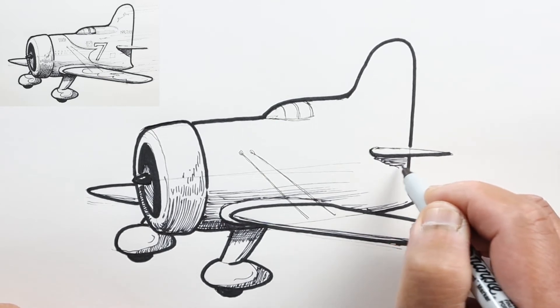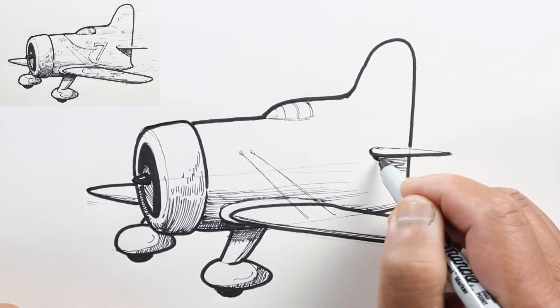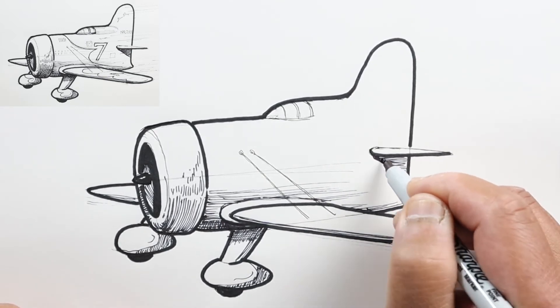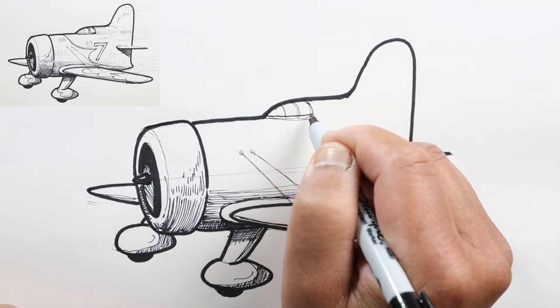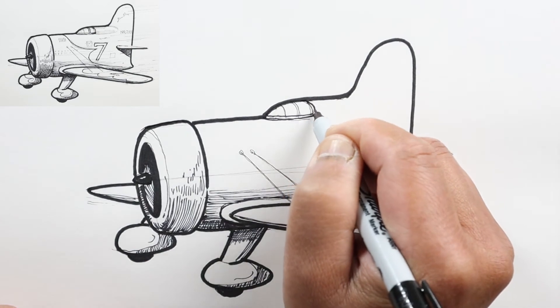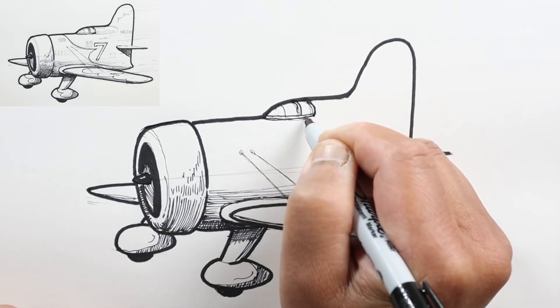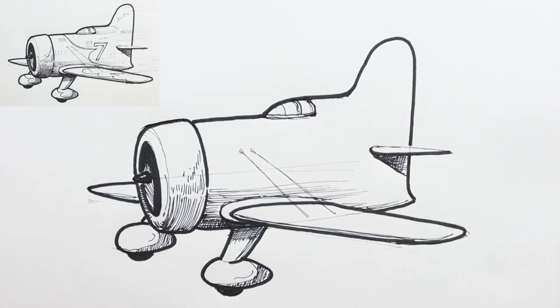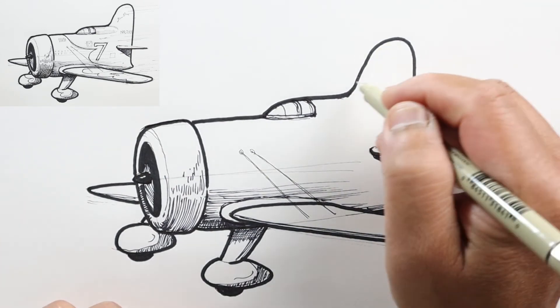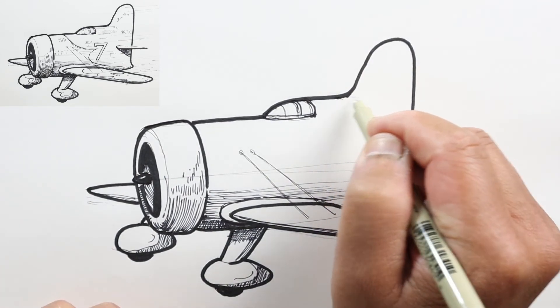But I'll add shadow here underneath this wing and define the canopy a little bit more. Now that I've done that, I'm going to switch to a thinner pen and add some more detail.